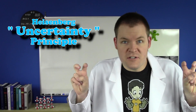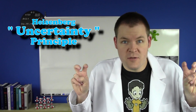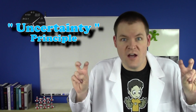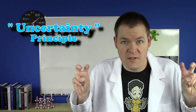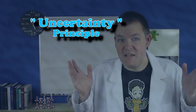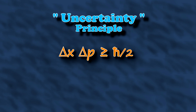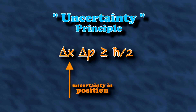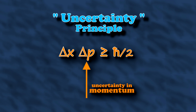The Heisenberg Uncertainty Principle, or sometimes just the Uncertainty Principle, is usually written as an inequality, like this. Where this is the uncertainty in position, and this is the uncertainty in momentum or motion. Oh, and one more thing? It's wrong!